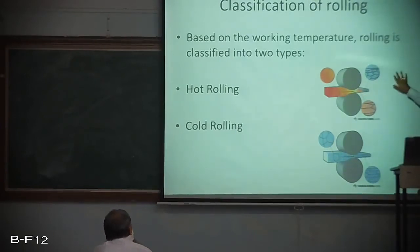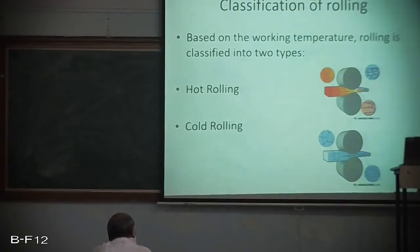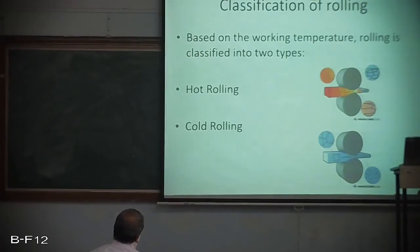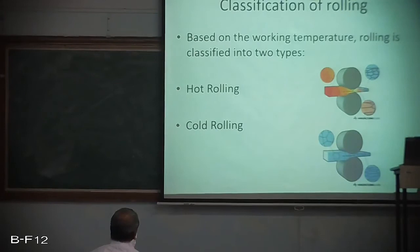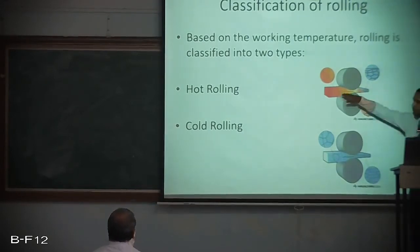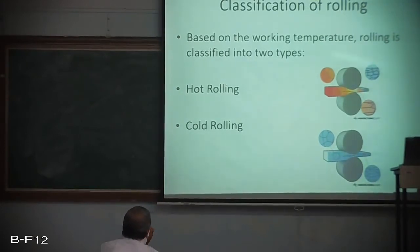In hot rolling, the workpiece is initially heated above the recrystallization temperature (RCT) and then passed between shaped rollers. High temperatures help the coarse-grained, brittle, porous structure of the ingot break down into a finer grain structure. The grain structure changes from coarse and large to fine and uniformly distributed. As the material is worked, temperature must be monitored to remain above the recrystallization temperature; if it drops, the material must be reheated. The final finishing temperature is usually 50–100°C above the recrystallization temperature.